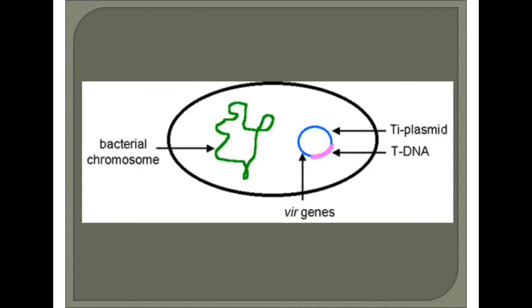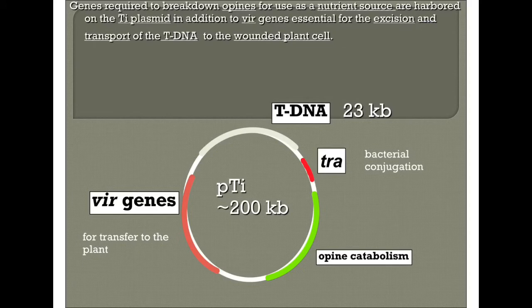The bacteria contains genomic DNA in addition to the Ti plasmid. Genes required to break down the opines, used as a nutrient source, are harbored on the Ti plasmid, along with genes essential for the excision and transport of the T-DNA to the wounded plant cell. The overall structure of the Ti plasmid is 200 KB, containing a T-DNA region of 23 KB, virulence genes for transfer to the plant, and opine catabolism genes.